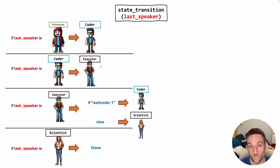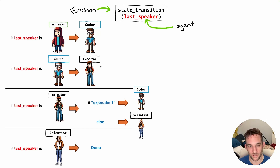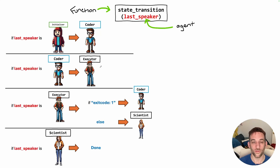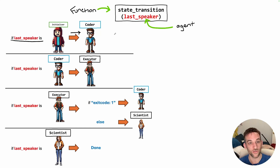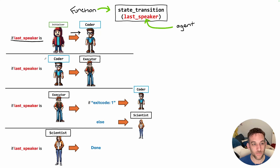So how does state flow actually work in code? We have a function called `state_transition` that takes in a parameter called `last_speaker`, which is just the last agent that spoke in the chat. Whenever we initiate the chat, this function gets called once each agent finishes speaking. So if the last speaker was the initializer, we return the coder — meaning the coder is now going to perform its task, write the Python code by calling the LLM, and when it's done, this function gets called again.